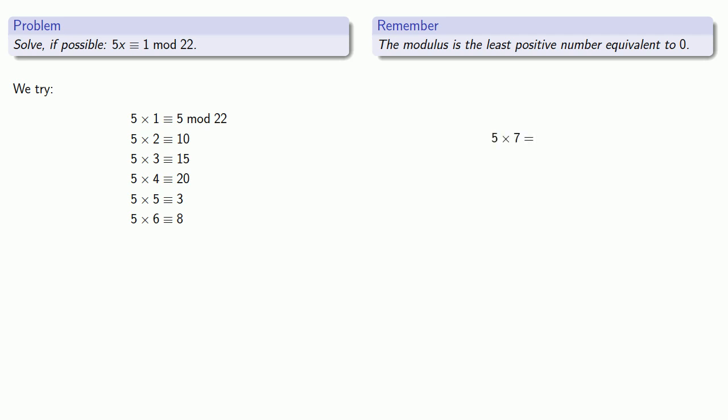5 times 7 is 13. 5 times 8 is 18. 5 times 9 is 45. So we could ignore this 22, and that would be 23. But we can also write 23 as 22 plus 1. And since we're working mod 22, both of these 22s can be ignored, leaving us with 1. And there's our solution.